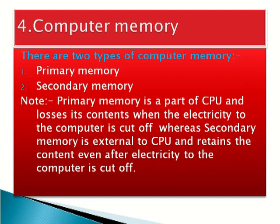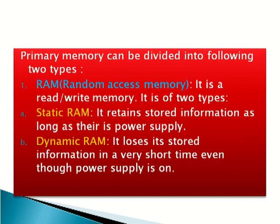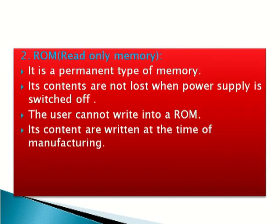Computer memory. There are two types of computer memory: primary memory and secondary memory. Primary memory is a part of the CPU and loses its contents when the electricity to the computer is cut off. Primary memory is divided into two types: random access memory, which has two types — static RAM, which retains stored information as long as there is power supply, and dynamic RAM, which loses its stored information in a very short time even though power supply is on. Read only memory is another type of primary memory. It is a permanent type of memory; its contents are not lost when power supply is switched off, and its content is written at the time of manufacturing.